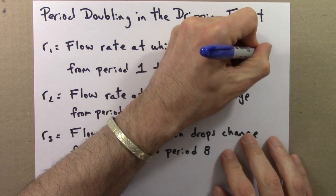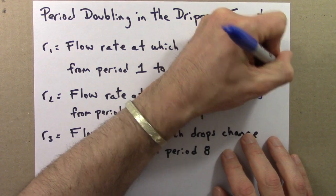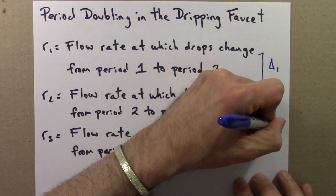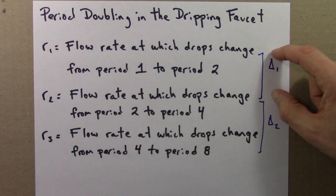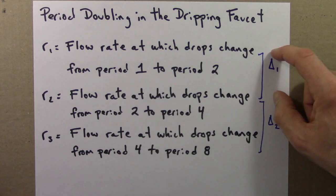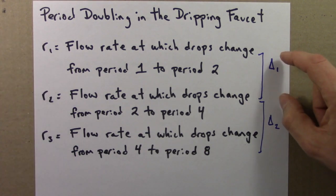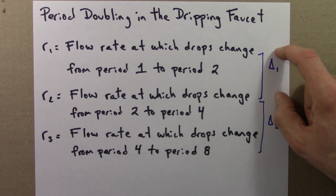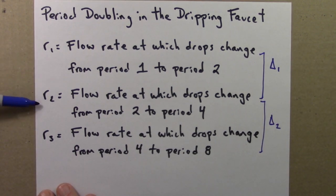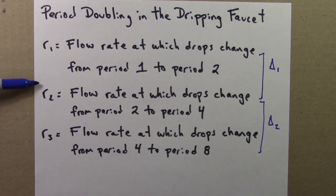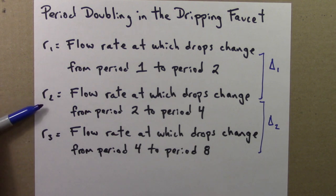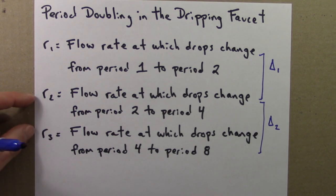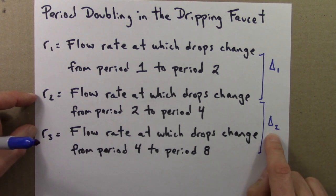We can calculate deltas for these just like we did for the logistic equation. Delta 1 is the range of flow rates at which we have period 2 behavior — period 2 starts at R1 and ends at R2, so the difference between these two is delta 1. Similarly, between R2 and R3 is the range where we have period 4 behavior, and that's what we call delta 2.